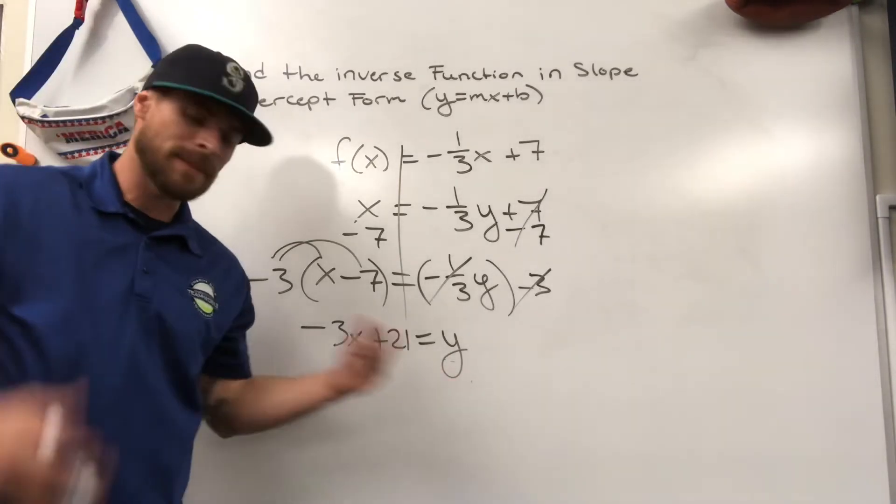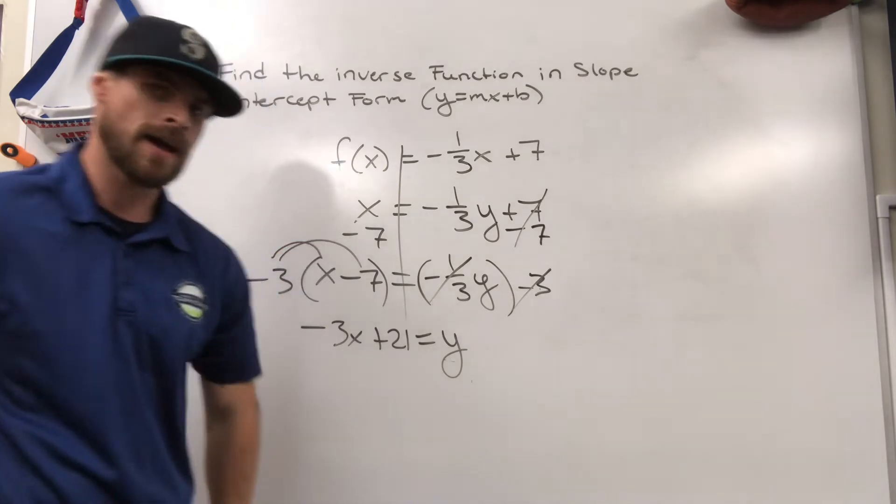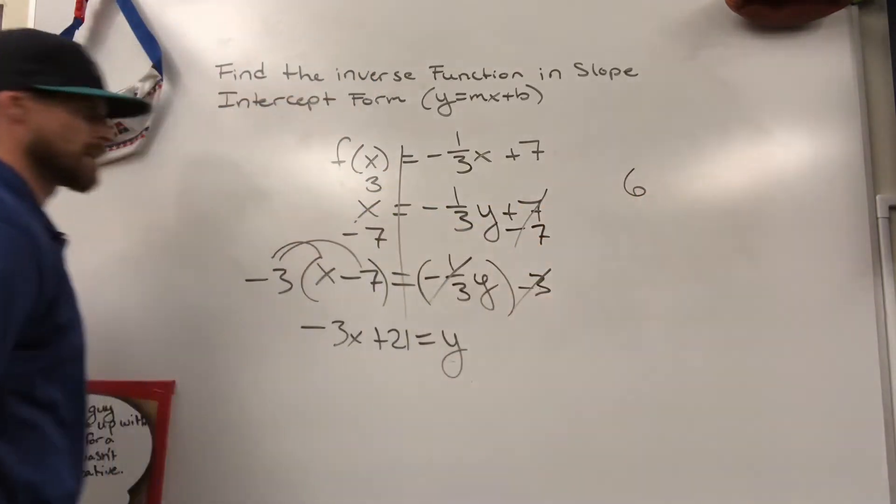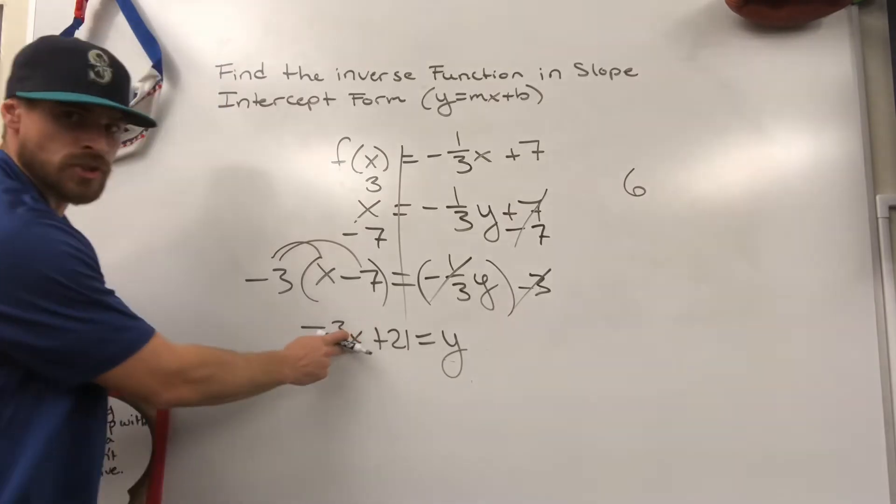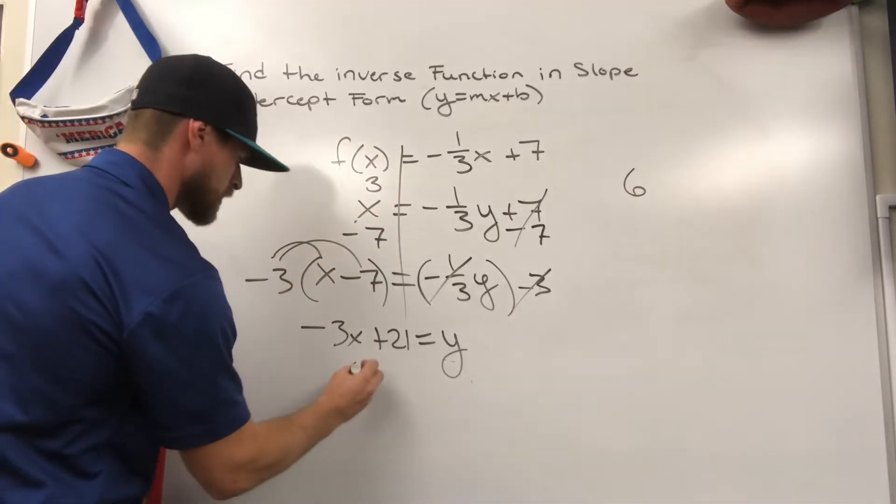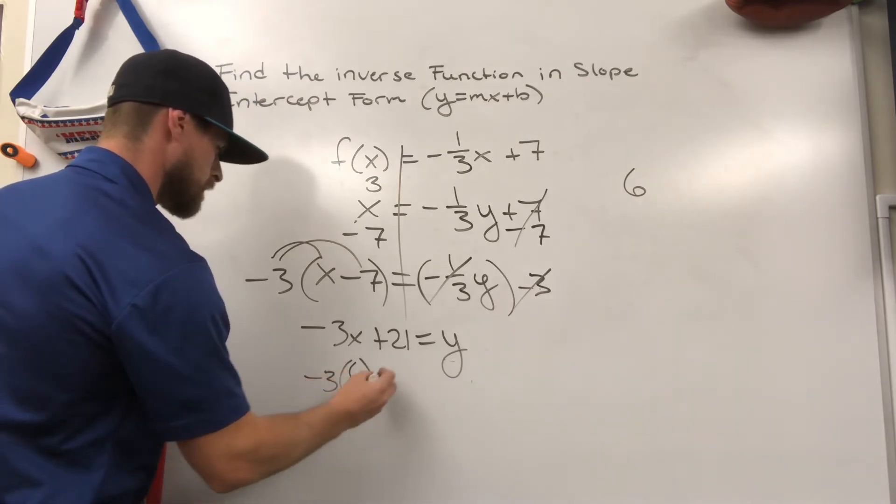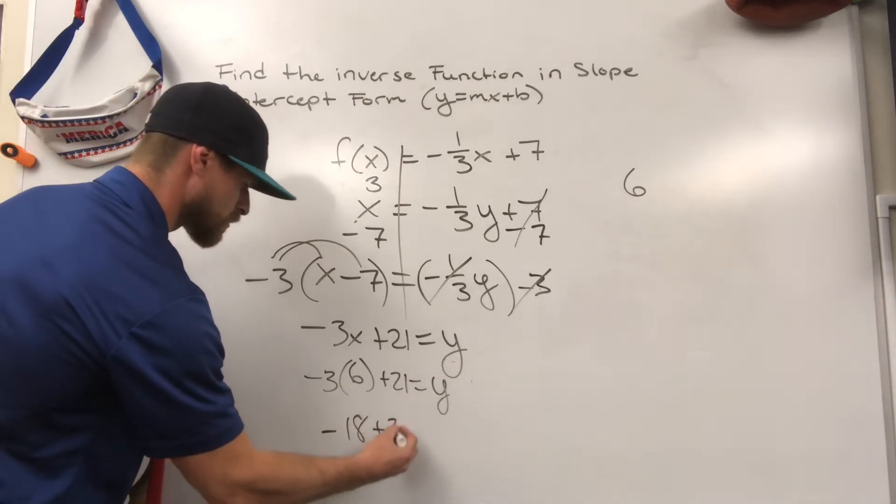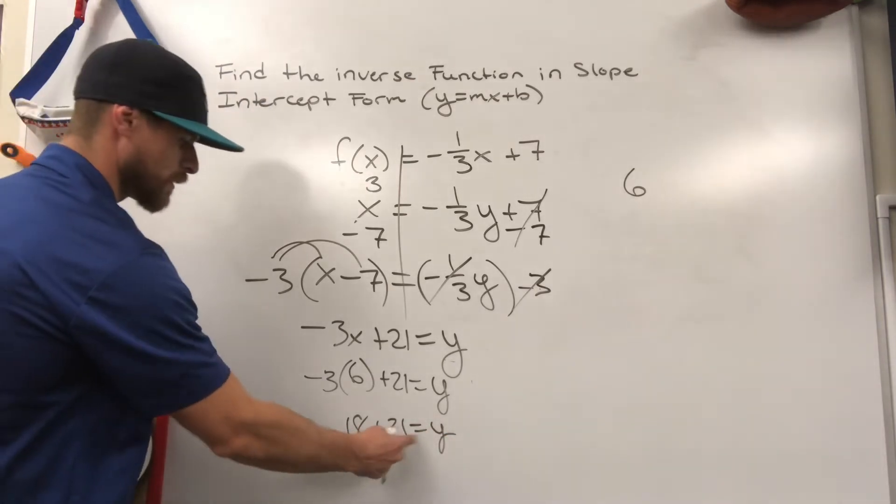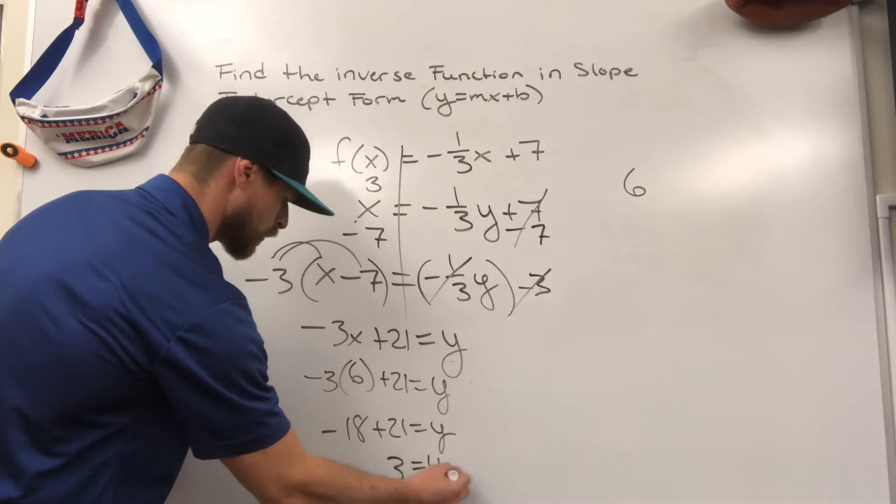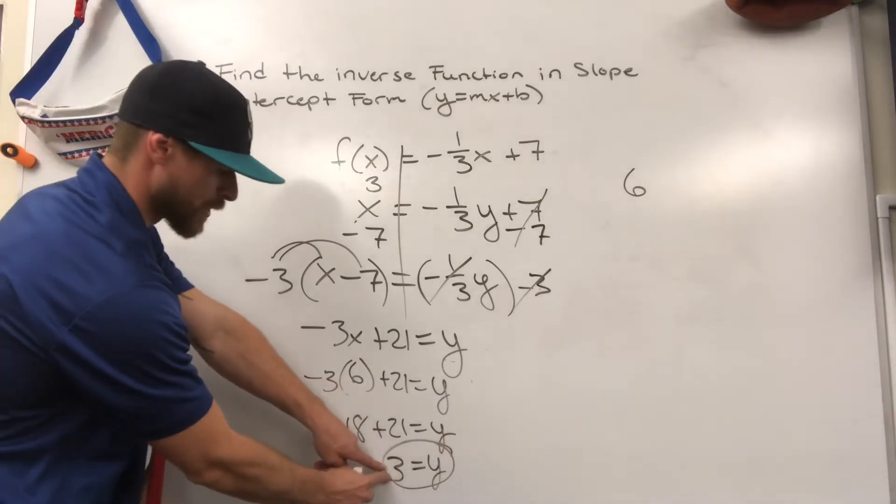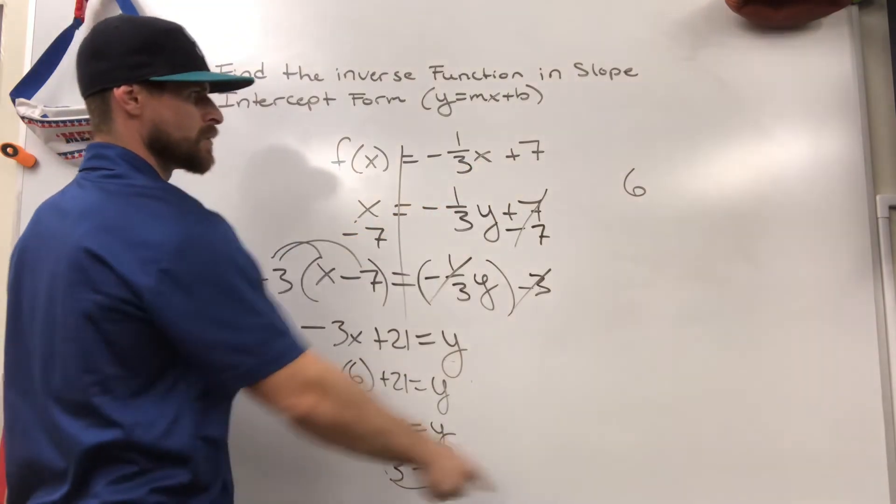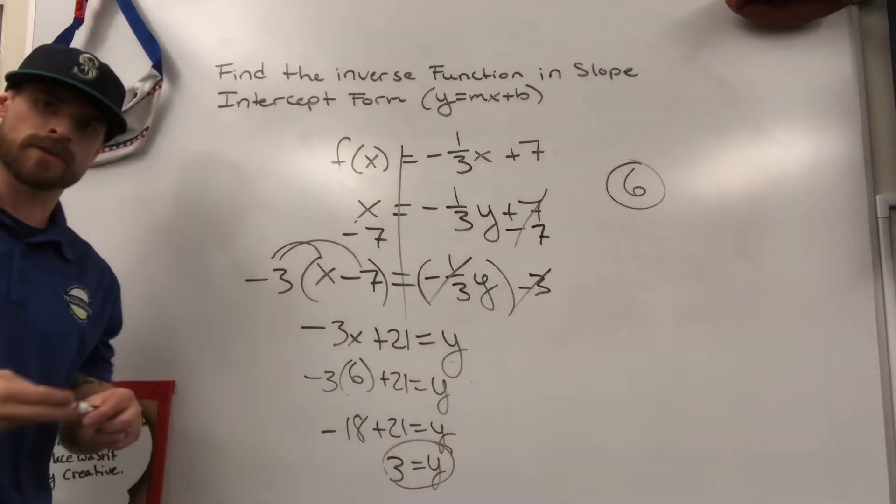I now have an equation where I believe I will get inverse values by plugging them in. Remember back at the start when I put a three in for x, it produced a six. Now if I put a six in for x, it should produce a three. Let's find out if that works. Let's put a six in for x. What's negative three times six? Negative 18 plus 21 equals y. Negative 18 plus 21 is three. It's equal to y. So when I put a six in, it produced a three. Remember back at the original when I put a three in, it produced a six. And that's how inverse functions really work.